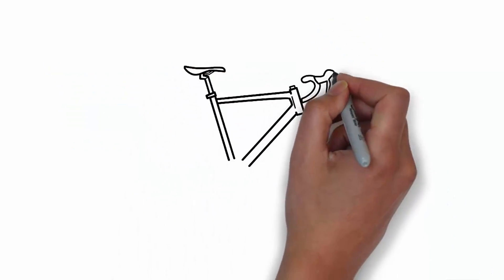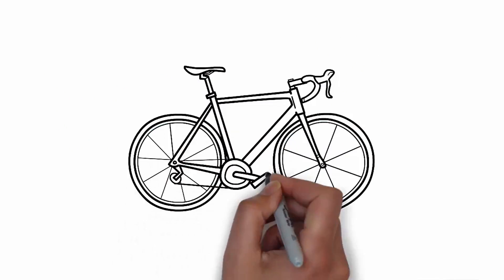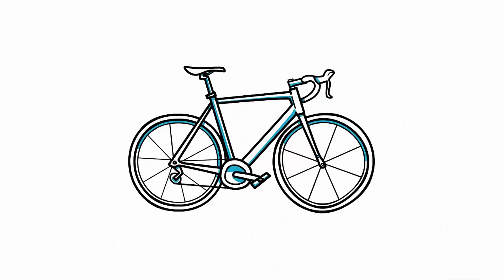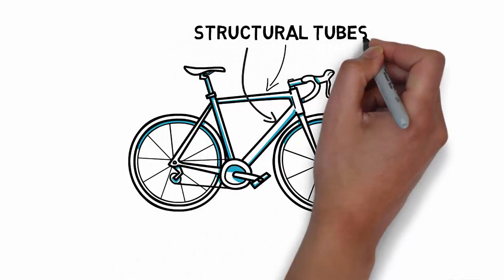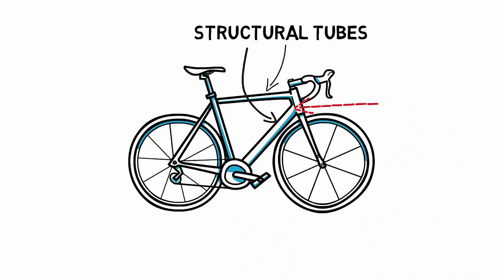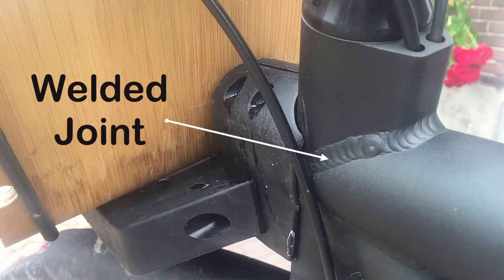I encountered the second class of joining method when commuting to work on one of the most common modes of transportation here in the Netherlands, the bicycle. If you look at the frame of a bicycle, you see that it is an assembly of structural tubes that have been joined together where the ends of the tubes meet. In the case of my bicycle, the joining technique used is known as welding.